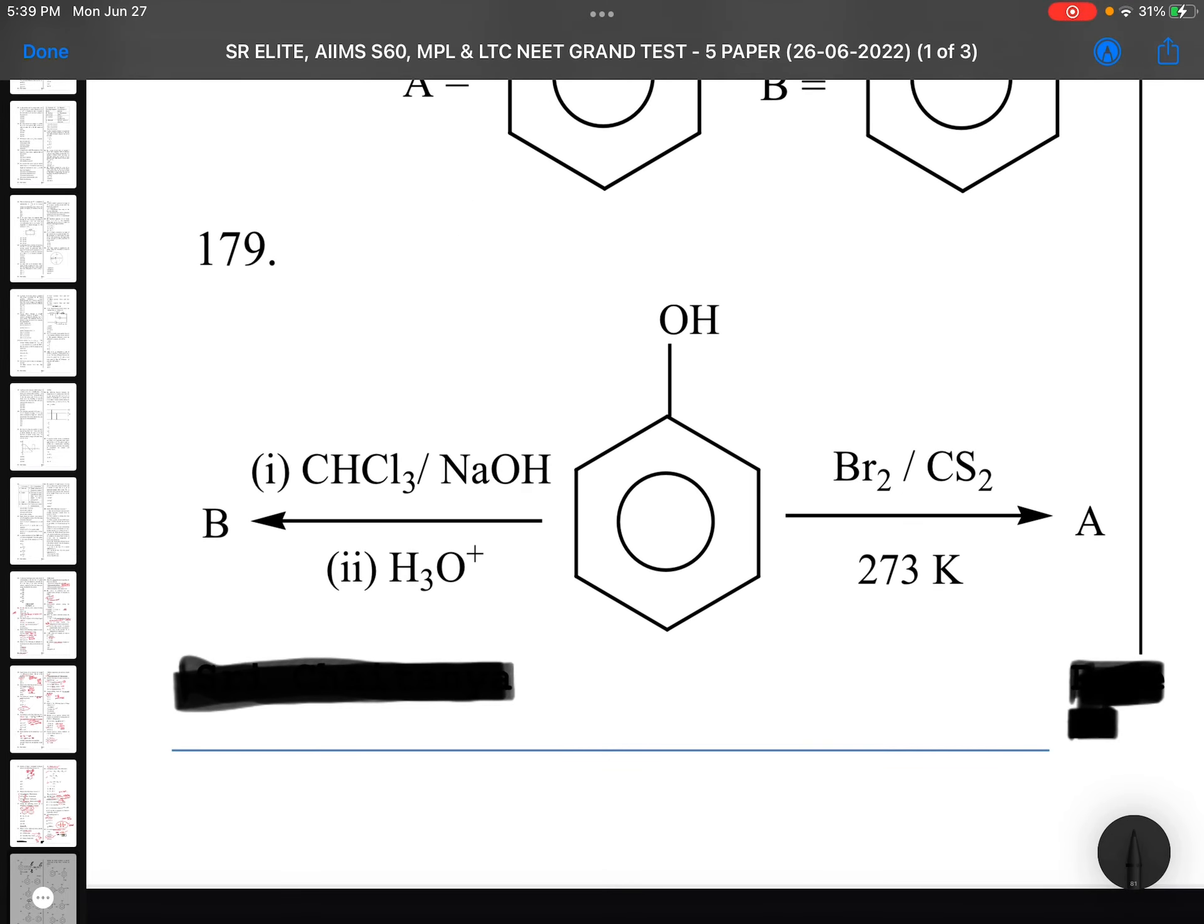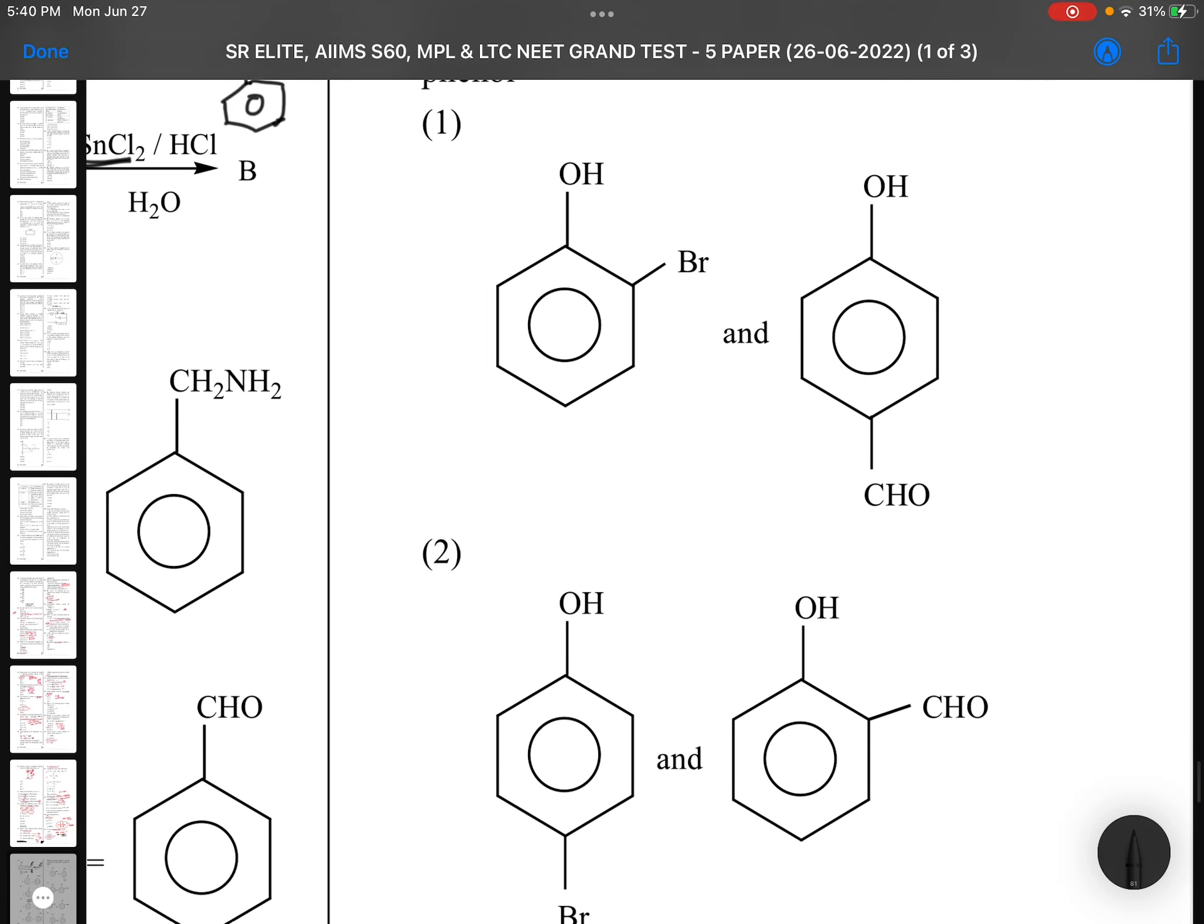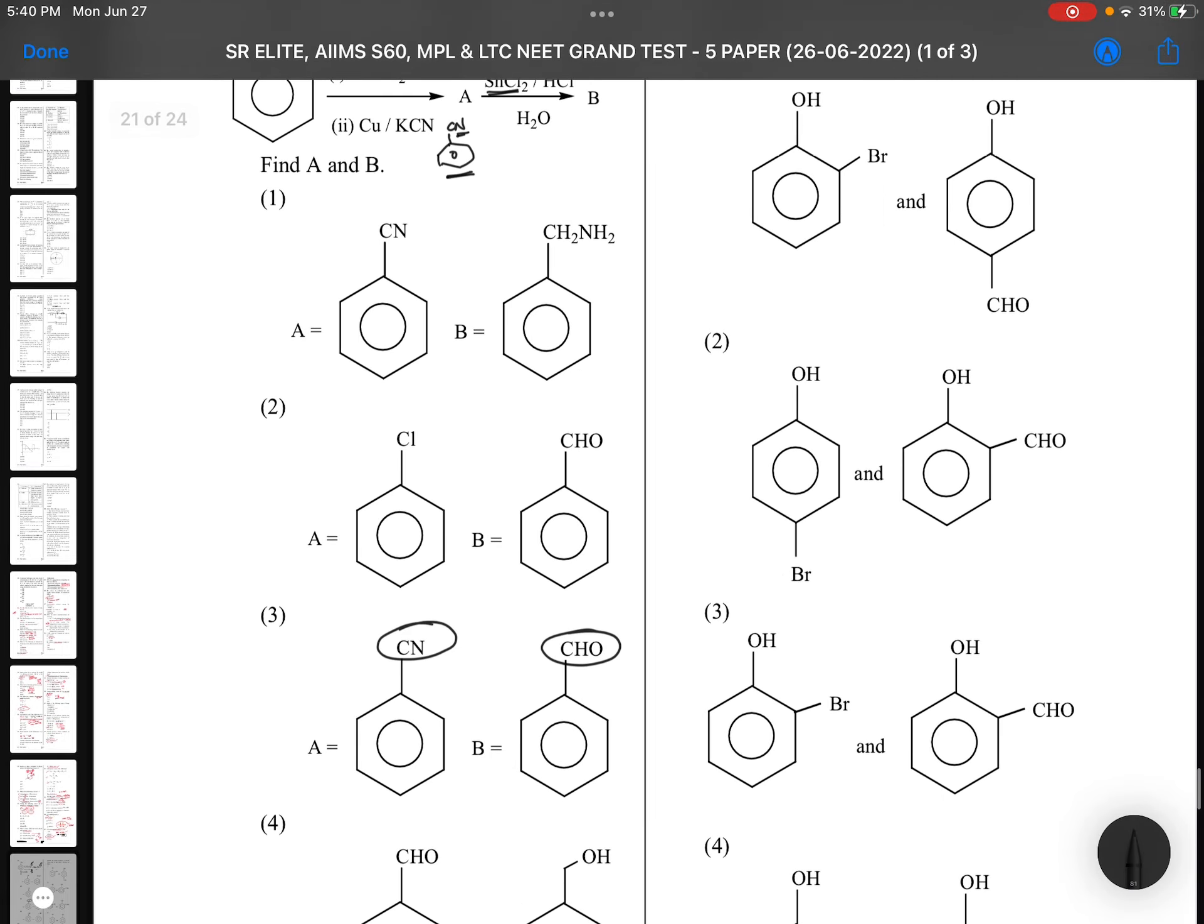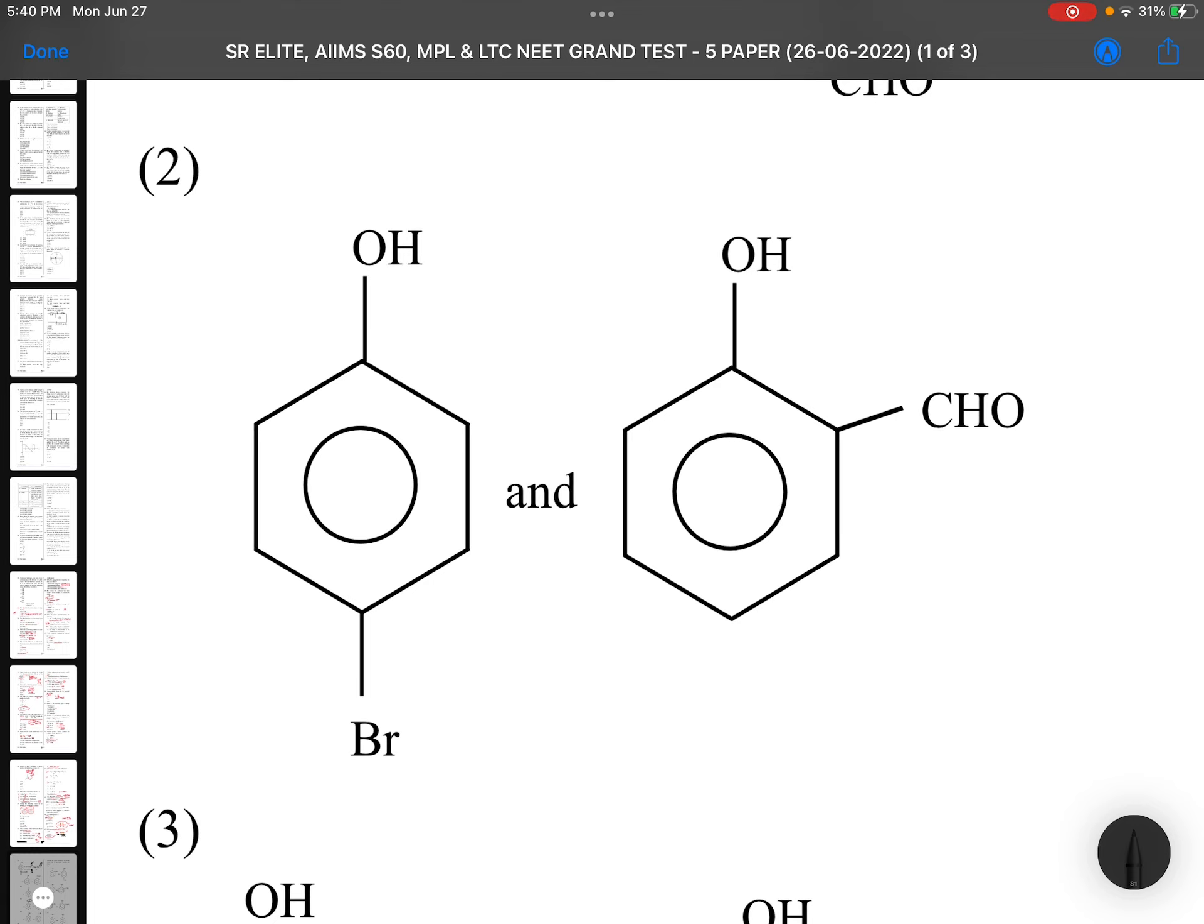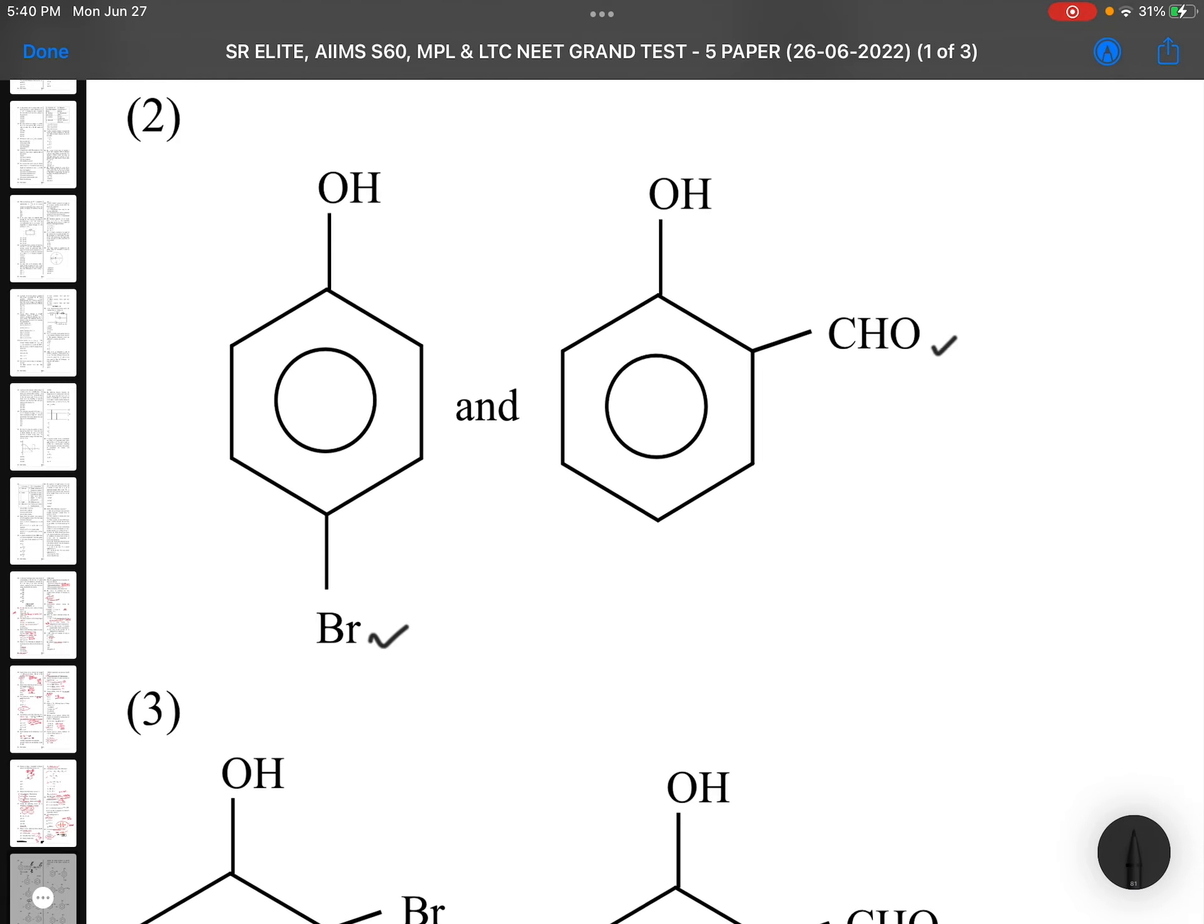Question 179: Here, this is phenol. Bromine in CS2 means one place you are going to get bromine, carbon disulfide. If you are taking bromine water, all the three positions 2, 4, 6. And this is CS2, so one place you can take it. And then CHCl3, NaOH, this is Reimer-Tiemann reaction. One very popular reaction, I think you remember very clearly. This is CHO, salicylaldehyde. Identify A and B respectively in the above reaction. Bromine at para position and CHO, Reimer-Tiemann reaction. And important point, remember CCl2, dichlorocarbene is the intermediate. Very special.